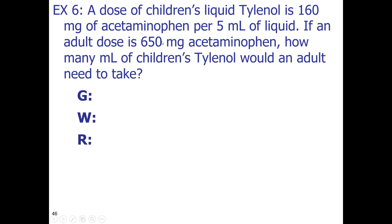It tells you the adult dose is 650 milligrams. As I read around, that doesn't really sound like a ratio, but it could be — maybe I can say adult dose equals 650 milligrams. This problem has a lot to do with reading comprehension, and if you can get past that, the calculation part is pretty easy.